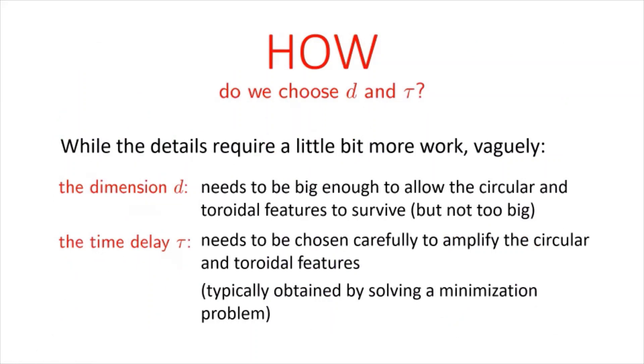So the last thing I want to mention before I end this little video is, you know, how do we actually choose d and tau? So like the details require a little bit more work. So I'm not going to mention them here, but vaguely speaking, the dimension d needs to be big enough to allow the circular and toroidal features to survive, but not too big that it runs into a computational trouble. And the time delay needs to be chosen carefully to amplify the circular and toroidal features. And typically it is obtained by solving a minimization problem.